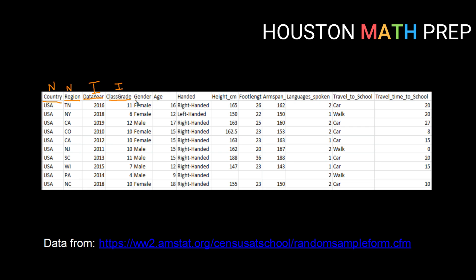Gender is qualitative, so it's either nominal or ordinal. We would not order gender — there's no putting things first or last — so that is nominal. Age is quantitative, so it can be interval or ratio. The difference between ages is meaningful, but also noting that one student is twice as old as another — that is a meaningful statement, meaning the ratio is also meaningful. So age is ratio level data.